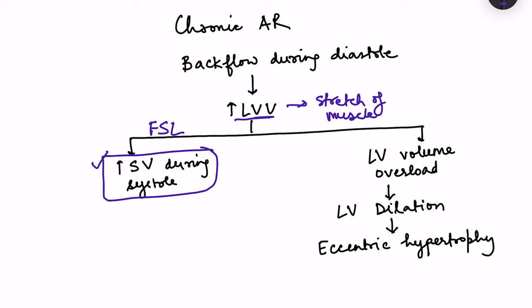Ejection fraction is stroke volume divided by end diastolic volume — the proportion of LVEDV that is ejected. We've seen that LVEDV increases, and because of Frank-Starling's law stroke volume also increases. So ejection fraction — the proportion of LVEDV ejected — is maintained in chronic aortic regurgitation, even though both LVEDV and stroke volume are quantitatively larger.